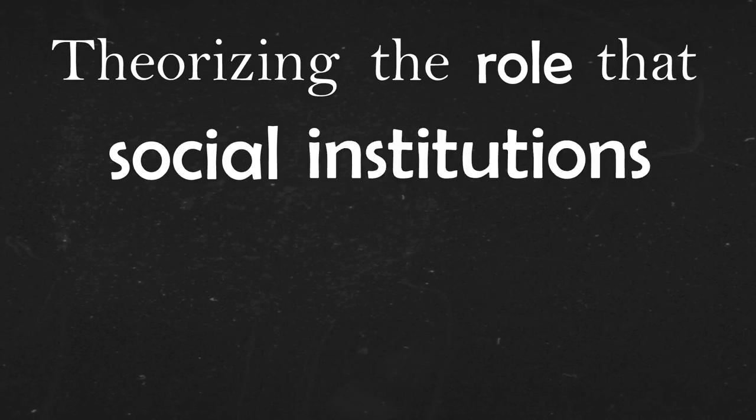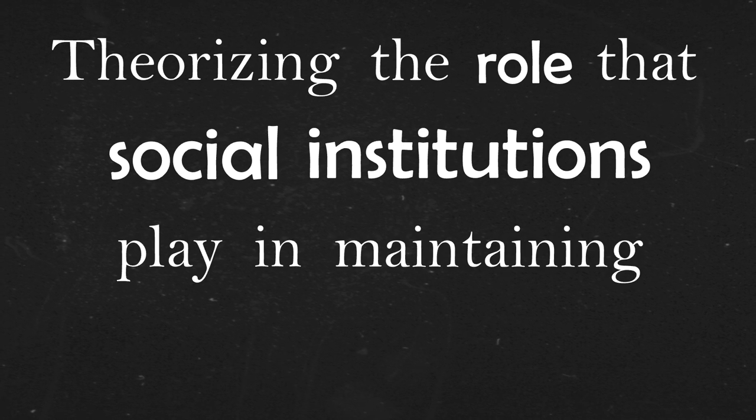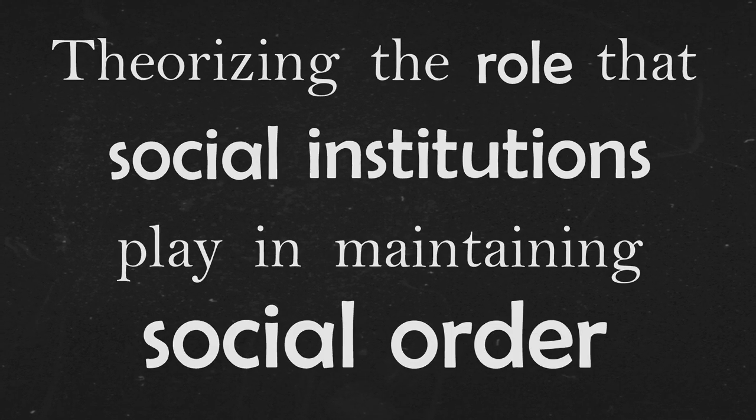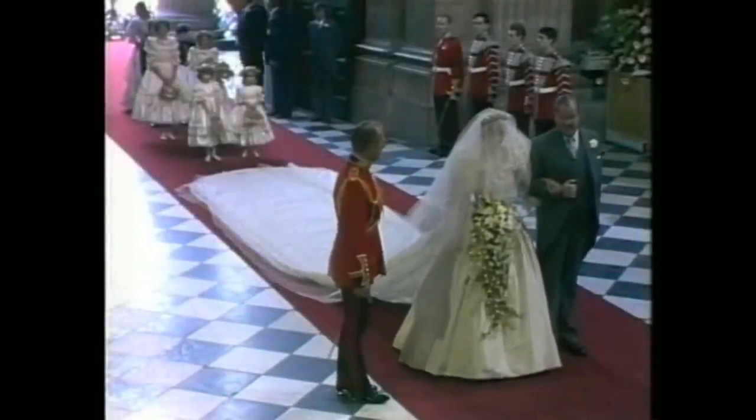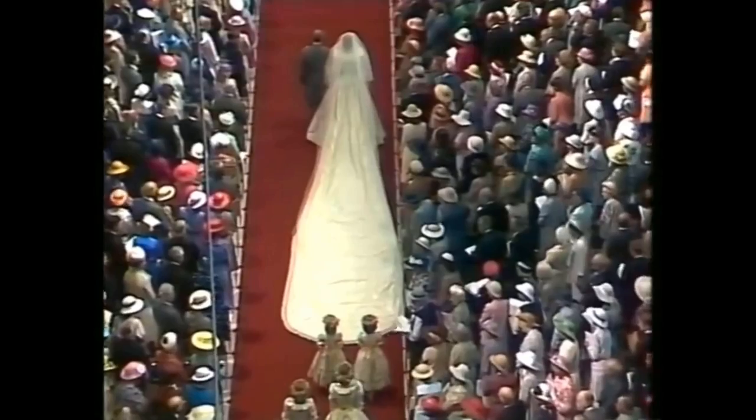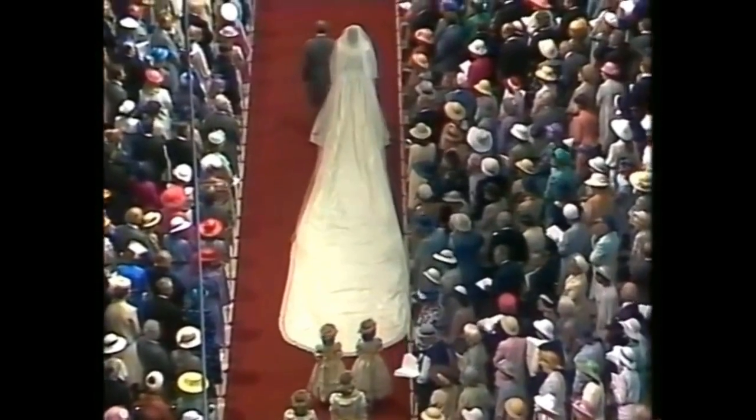Functionalism itself is not so much a theory as it is a macro-oriented method of analysis—a way of looking at a society in its entirety and theorizing the role that social institutions play in maintaining social order. In other words, the inherently conservative function that things like marriage, gift exchange, or religious beliefs play in contributing to the long-term survival and stability of a society.